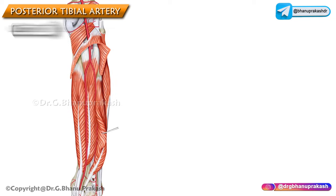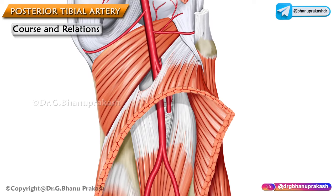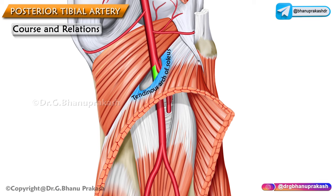What about the course and relations? It begins at the lower border of the popliteus between the tibia and fibula and enters the back of the leg by passing deep to the tendinous arch of the soleus.